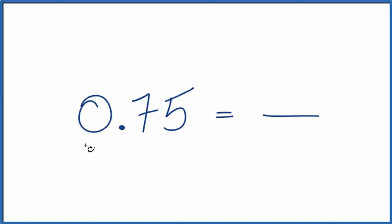If you need to convert the decimal 0.75 to a fraction, where we have a whole number numerator over a whole number denominator, this is how you do it.